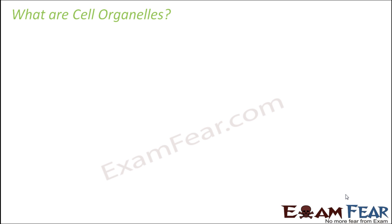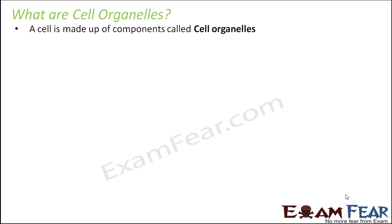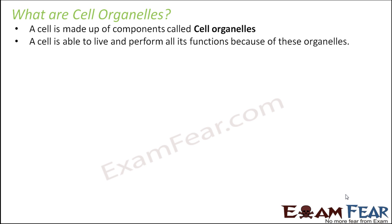When we talk about eukaryotes, we talk about cell organelles. So what exactly is a cell organelle? A cell is made up of components called cell organelles. A cell organelle performs the same function in a cell as organs perform in our body. For example, the heart is an organ which helps our body to stay alive. Similarly, cell organelles are those kinds of organs present inside the cell, without which the cell will not be able to perform its functions. There also has to be coordination and synchronization between the functions performed by different organelles.